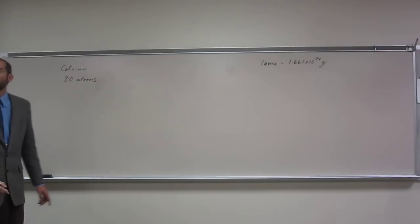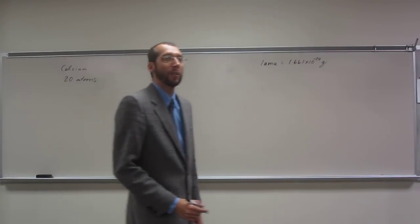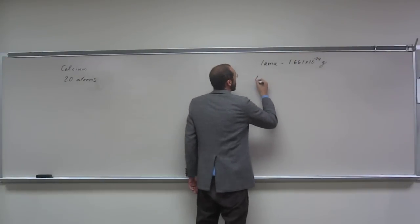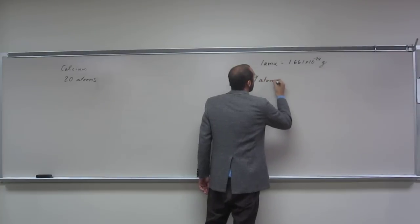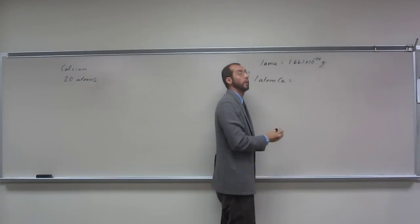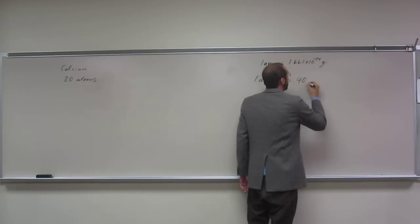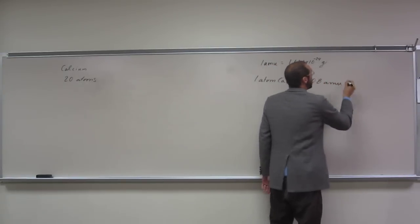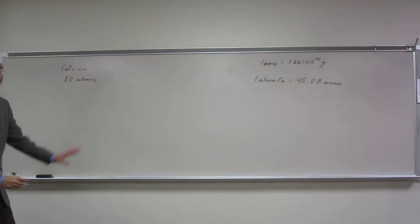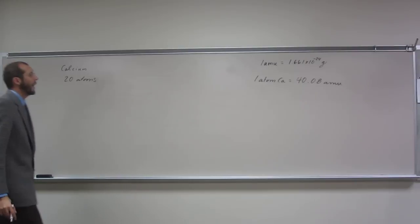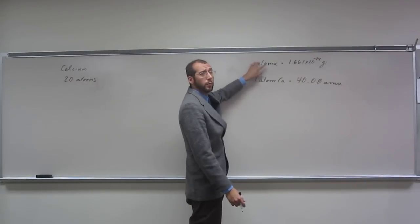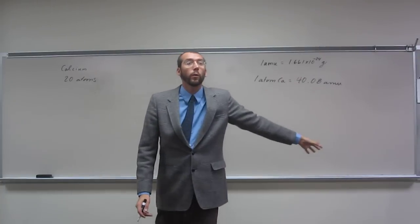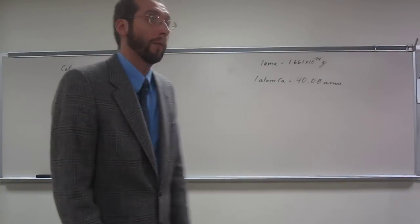What do we know about one atom of calcium and how much it weighs? We look at the periodic table, and we've got a conversion. One atom of calcium equals 40.08 amu. And we already know this other conversion factor that was given to us, one amu to grams. So we should be able to put these two in a row to get this mass.